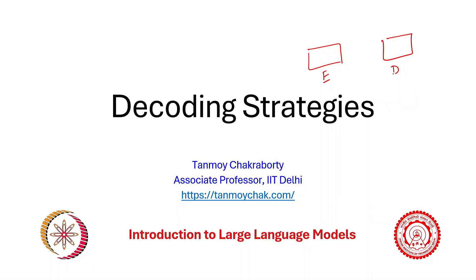If you remember, we have this encoder-decoder model. The application is machine translation, let's say English to Hindi — input is English and output is Hindi. At every state of the LSTM, or let's say transformer, we will produce a distribution and from the distribution the task is to choose the word which you want to place at this position.